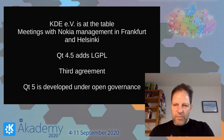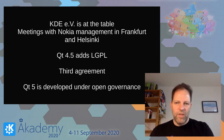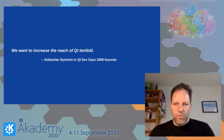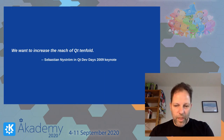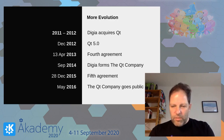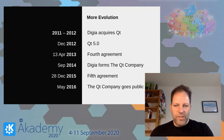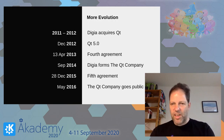Nokia also added the LGPL, and there was a third agreement to reflect the changes. Qt 5 was then developed under open governance when Nokia opened Qt to contributions from more people. Sebastian Neustrom, who was running the Qt part of Nokia at that time, said in the keynote at the Qt Dev Days in 2009 that they wanted to increase the reach of Qt tenfold — something you clearly can't do without community outreach. Over the years there was more evolution: Nokia changed plans, Digia acquired Qt, Qt 5 was released, a fourth agreement reflected the changes, then the Qt Company was formed and eventually went public, with another agreement reflecting those changes. That's basically the state where we are today.